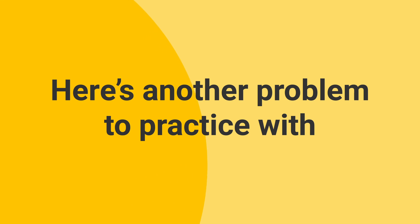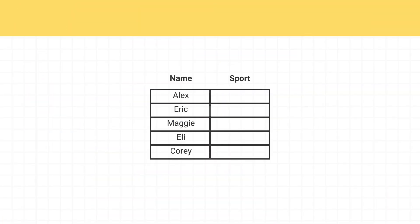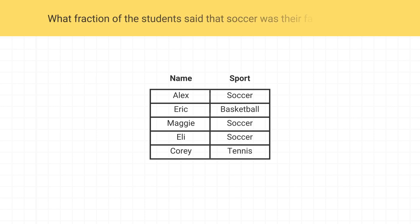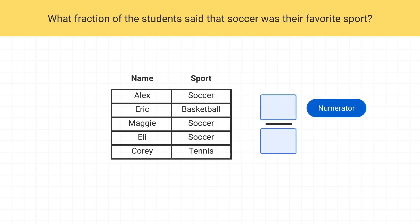Here's another problem to practice with. Some students were asked what their favorite sport was. These were their responses. What fraction of the students said soccer was their favorite sport? Let's solve this one piece by piece. Because we're looking for the fraction of students that said soccer was their favorite, the numerator will be the number of students that said their favorite sport is soccer. We can count that one, two, three students said soccer was their favorite, so our numerator is three.